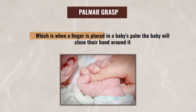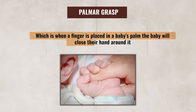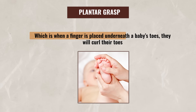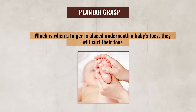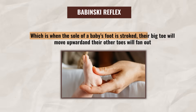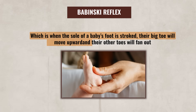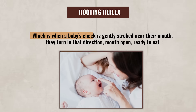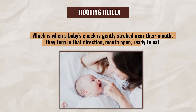We're not going to talk about all the different infant reflexes, but I do want to highlight a couple of them. The first is the palmar grasp, which is when a finger is placed in a baby's palm, the baby will close their hand around it. The next is the plantar grasp, which is when a finger is placed underneath a baby's toes, they'll curl their toes. Then there is the Babinski reflex, which is when the sole of a baby's foot is stroked, their big toe will move upward and their other toes will fan out. And lastly, there is the rooting reflex, which is when a baby's cheek is gently stroked near their mouth, they turn in that direction, mouth open and ready to eat. These are just a couple of examples of reflexes that indicate healthy neurological development.